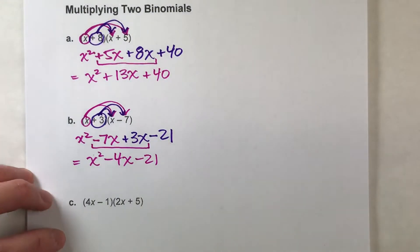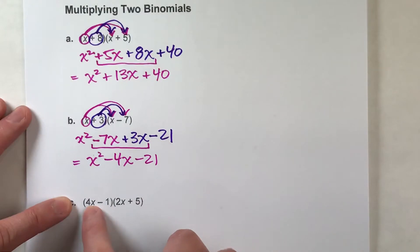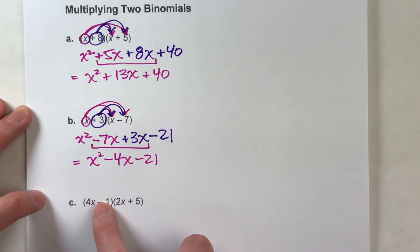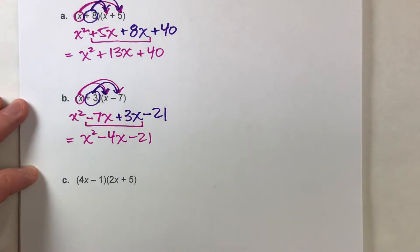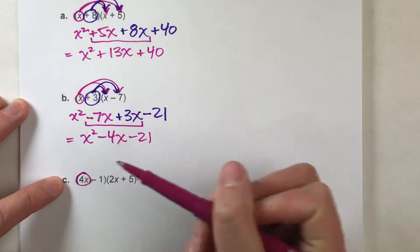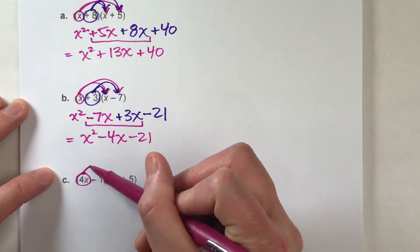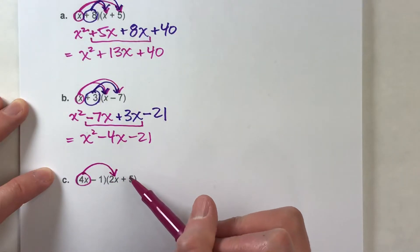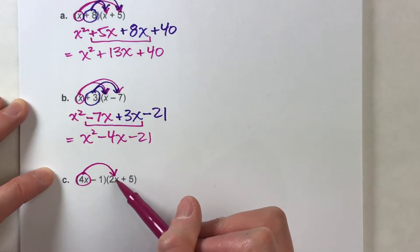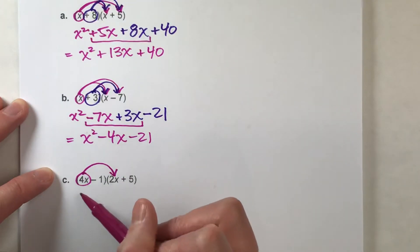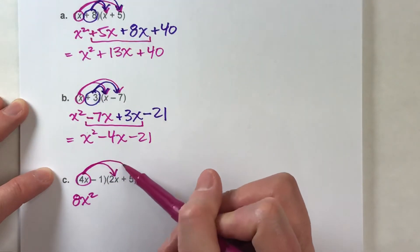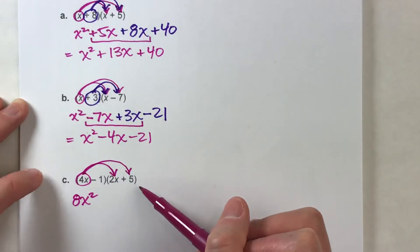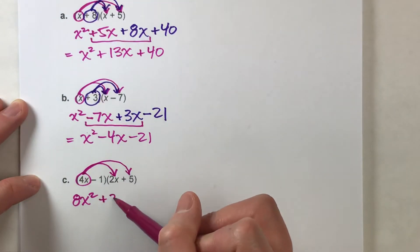Last one. This one's a little more complicated because this time it's not just a single x in front — we've got 4x and 2x. But it doesn't change our process, it just makes things a little more complicated. 4x is the first term, so I'm going to multiply 4x by the first thing in the second parentheses. 4x times 2x: 4 times 2 is 8, x times x is x squared, so 4x times 2x is 8x squared. Now do 4x times positive 5, which is 20x.